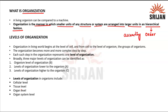We are going from smaller units to larger units, which is the basic idea of ascending order. That is what we understand by organization — arranging something in ascending order. It could be any structure or any system. The example we can take here is a living organism compared to a machine.